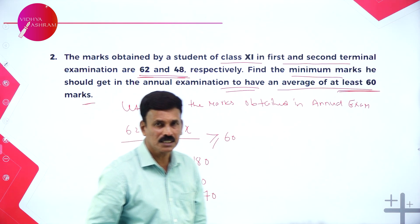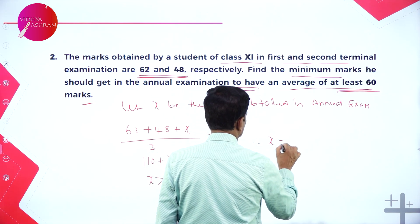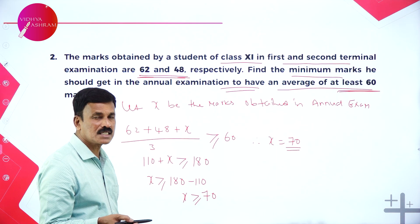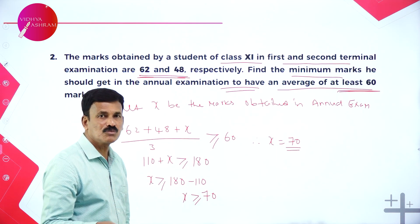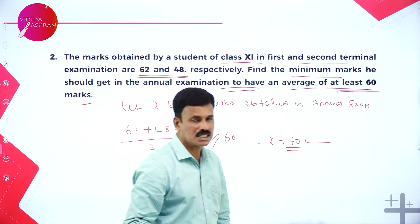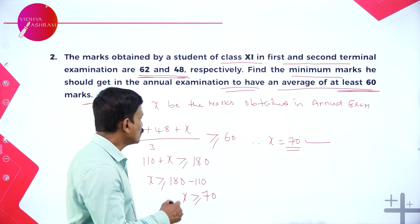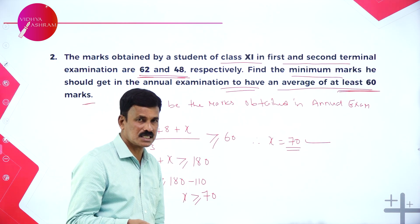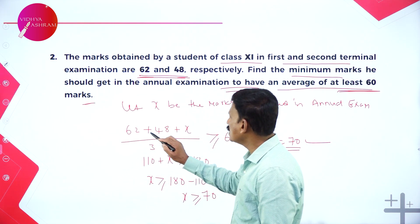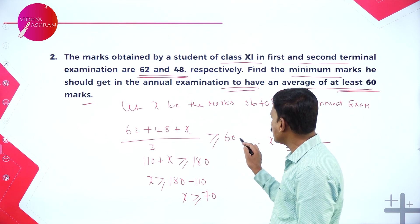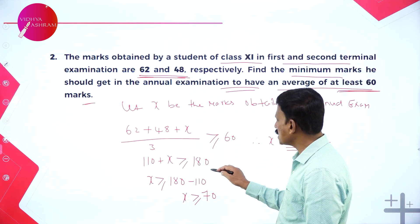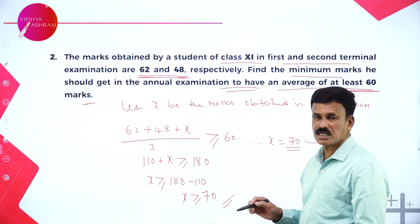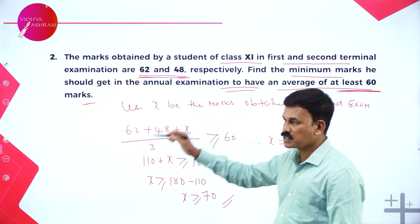So x ≥ 70. Therefore, the student must score a minimum of 70 marks in the annual examination in order to keep the average score as 60. Very simple problem — just take the average: (62 + 48 + x)/3 ≥ 60, giving x ≥ 70. Minimum 70 marks must be scored in the annual examination.